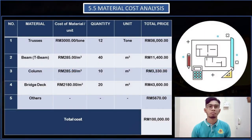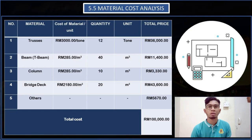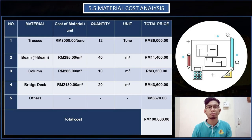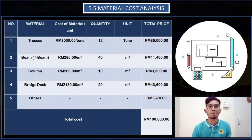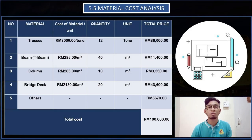Material cost analysis as shown in the table. Trusses: cost per unit is RM3,000, quantity used is 12, total cost is RM36,000. Beam: we use T-beam, cost per unit is RM285 per cubic meter, quantity is 40, total is RM11,400. Column: cost per unit is RM285 per cubic meter, quantity is 10 units, total is RM3,330. Bridge deck: cost per unit is RM2,180 per cubic meter, quantity is 20 units, total is RM43,600. Other miscellaneous items are estimated at RM5,670, making the total material cost approximately RM100,000.